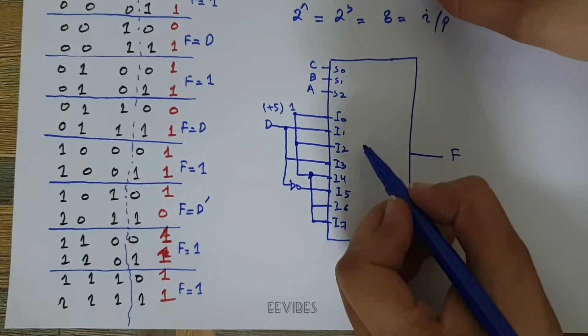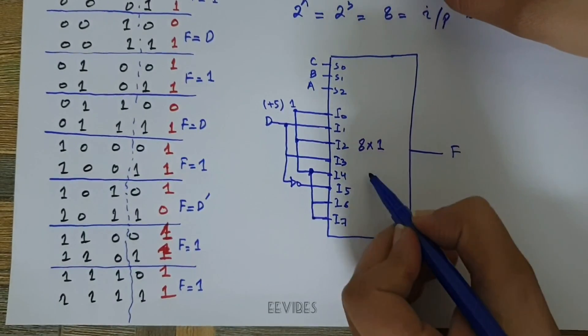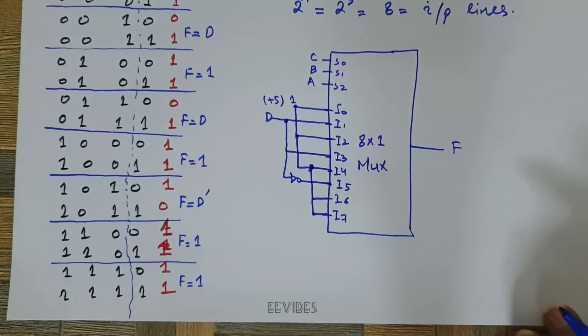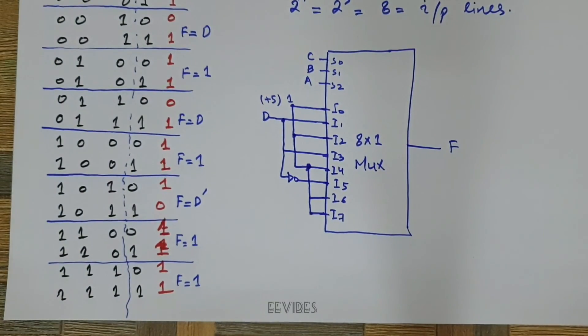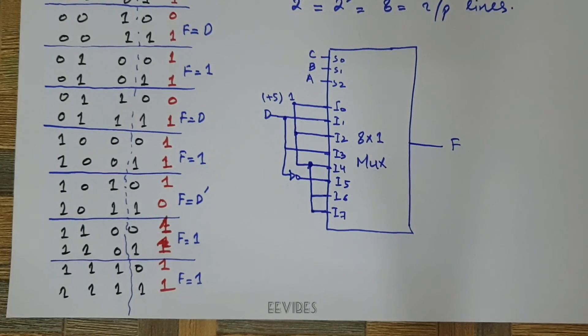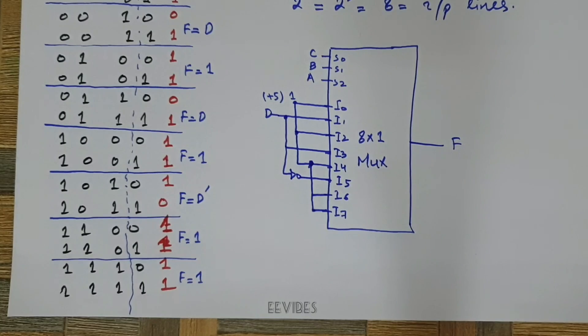So in this way, using an 8-to-1 line mux, you have implemented the function. Thank you for watching. If you have any questions, you can drop your question in the comment section and I will try my best to answer you.